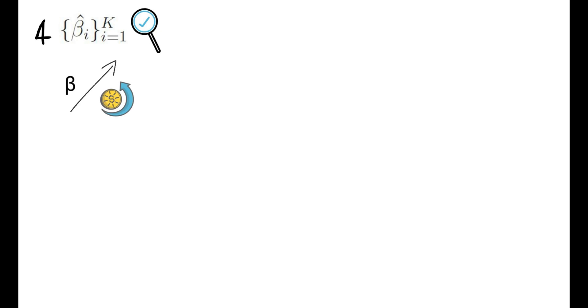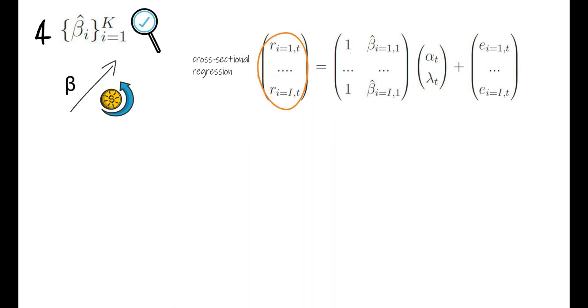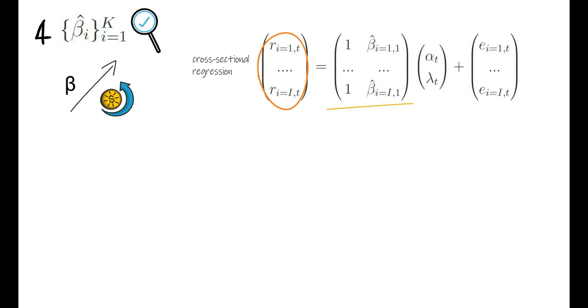So that second stage regression reads as follows: for all time periods, you run the following cross-sectional regression. You regress the realized returns of firm I1 up to firm I onto a constant and their respective beta.